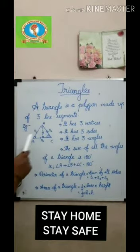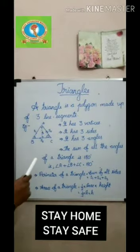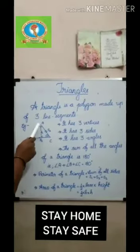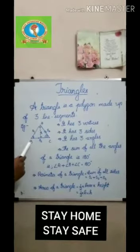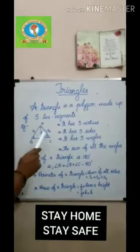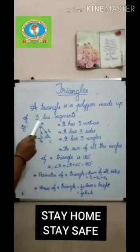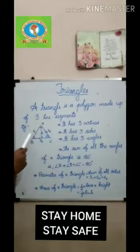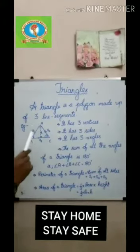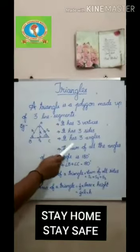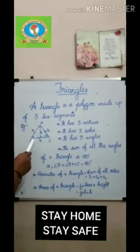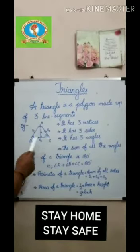A triangle has three vertices. Here they are: vertex A, vertex B, and vertex C. It has three sides — here they are: AB, BC, and CA. It has three angles — here they are: angle A, angle B, and angle C.